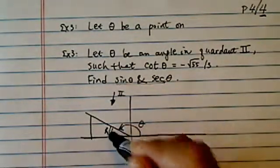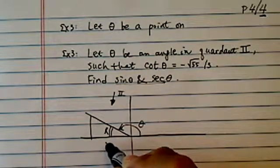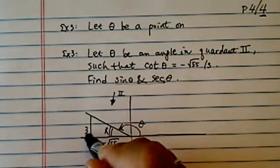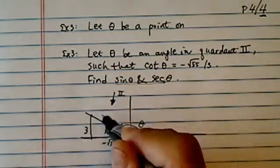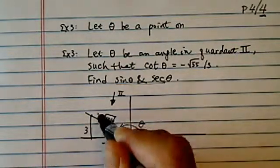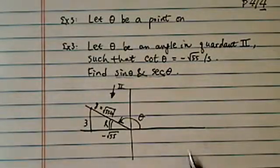So here's my reference angle. Cotangent is this arm first, so minus √55, then 3. The Pythagorean theorem says this one is 55 plus 9, which is 64. Hey, I like that number much better. It's 8.